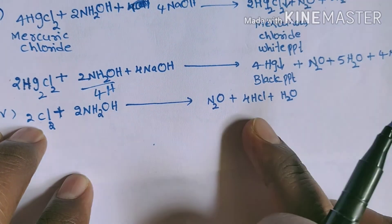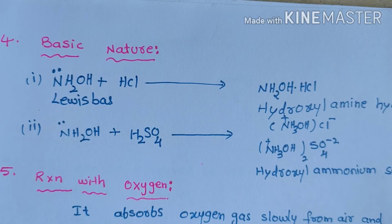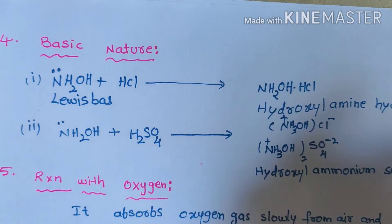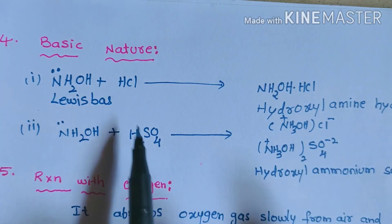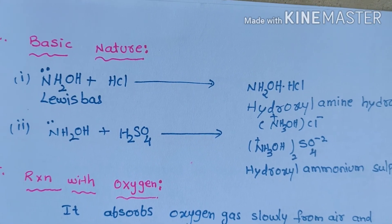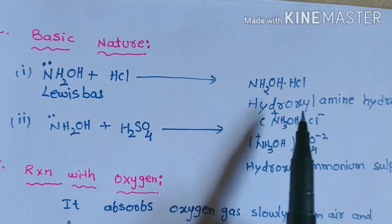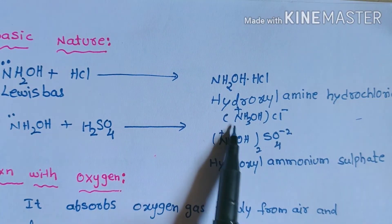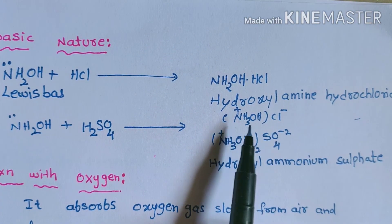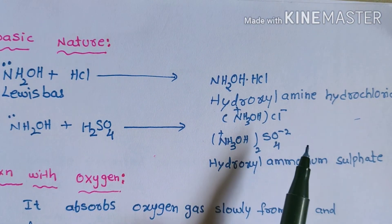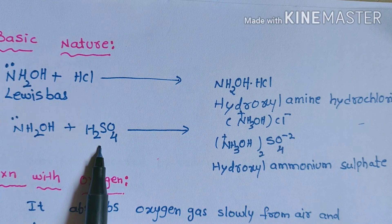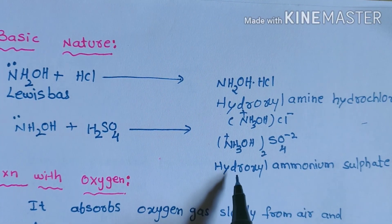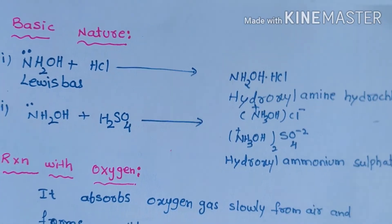Hydroxylamine also reduces halogens — for example, it reduces chlorine to hydroxyl chloride. Hydroxylamine behaves as a base because on the nitrogen atom there is one lone electron pair, making it a Lewis base. It combines with acids like HCl and H₂SO₄ to form salts. The salt formed with HCl is called hydroxylamine hydrochloride, written as [NH₃⁺OH]Cl⁻, also known as hydroxylammonium chloride. Reacting with H₂SO₄ gives hydroxylammonium sulfate.